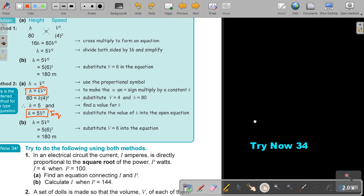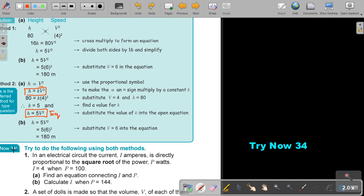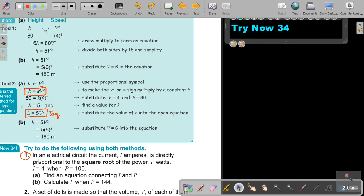I want you to stop the video, and I want you to do try now 34 number 1. And in this case, you can do it only on the second method. If you are doing it more practice, you can try the first method, and you'll also see in the teacher's guide the first method. But for now, for the video, we will just do it on the second method. So in the electrical circuit, the current, A amperes, is direct proportional to the square root of the power, p watts.